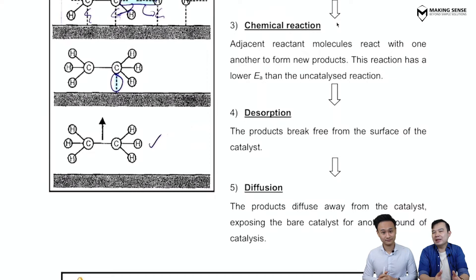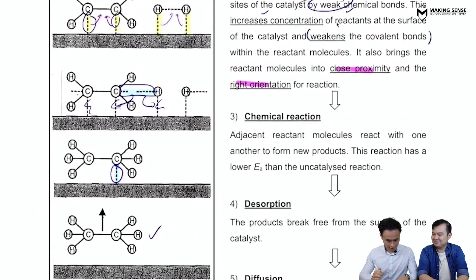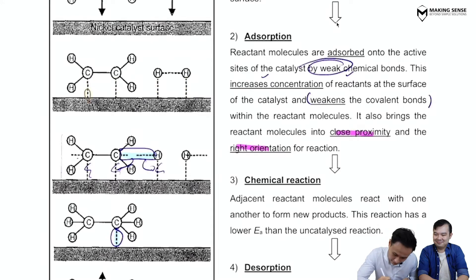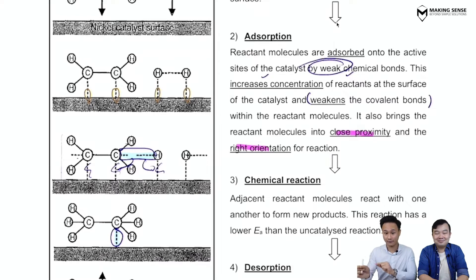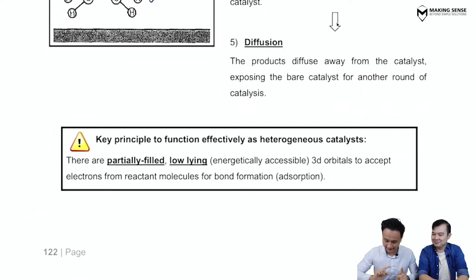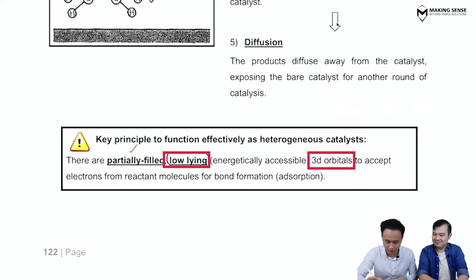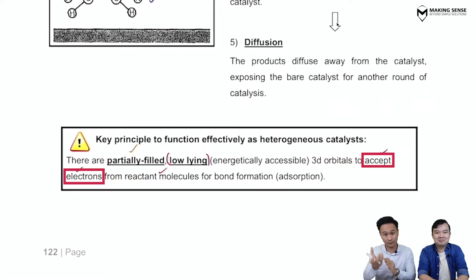In the context of transition metals, what allows them to act as heterogeneous catalysts? Going back to the adsorption step — to form bonds with the catalyst you need available orbitals. For transition metals, these are the 3d orbitals. Specifically, you need partially filled or empty 3d orbitals that are low in energy to accept electrons from the reactant molecules.